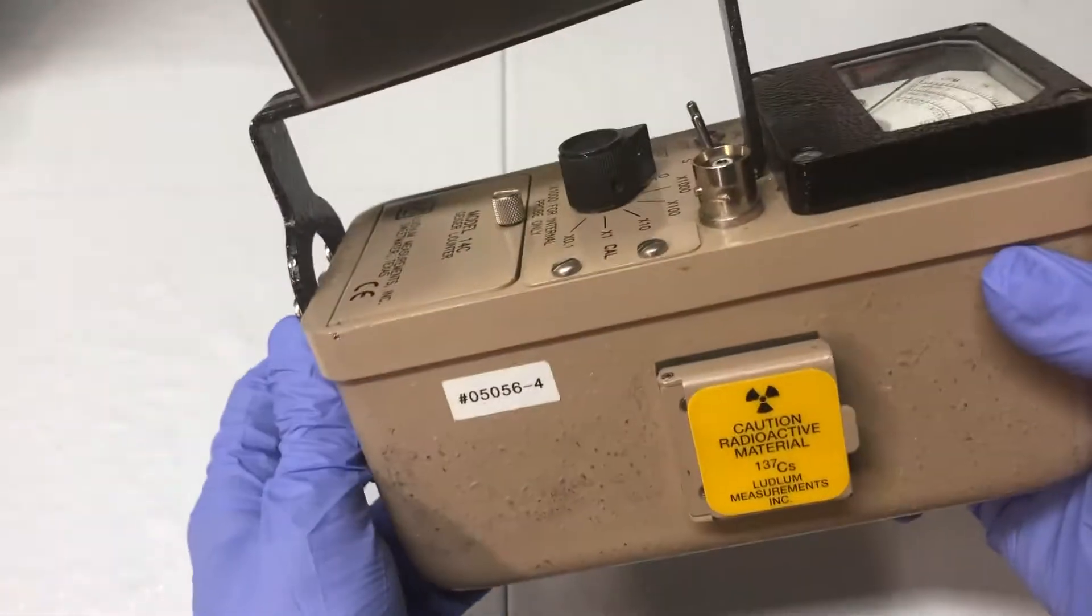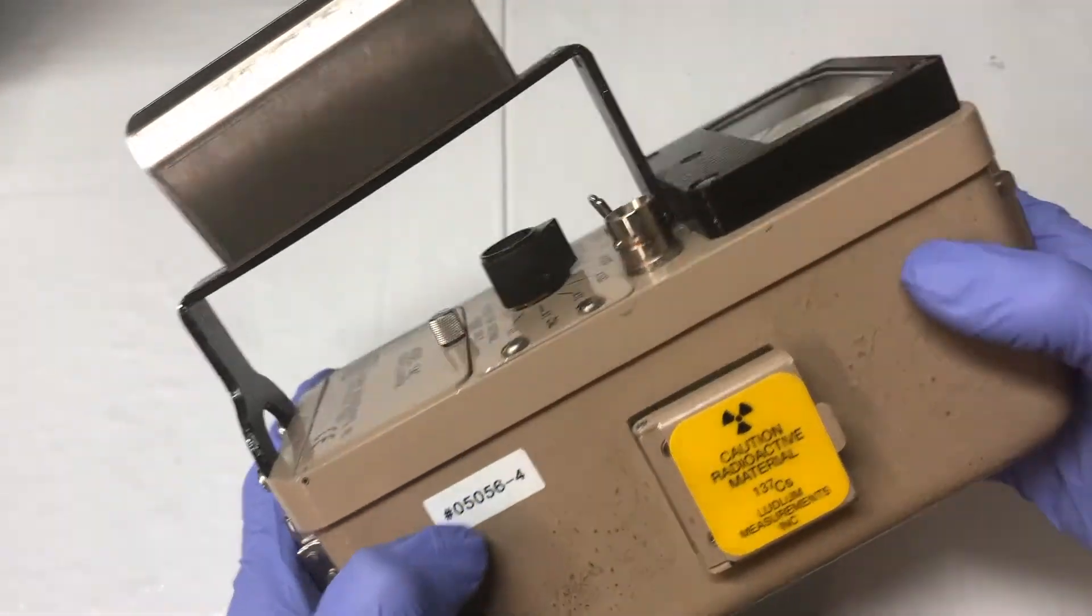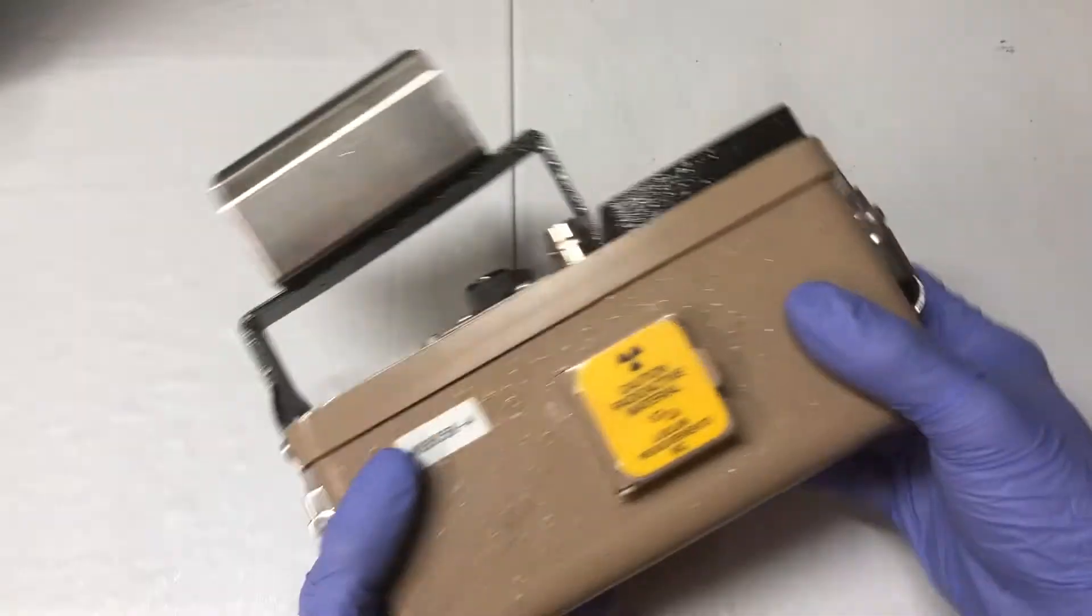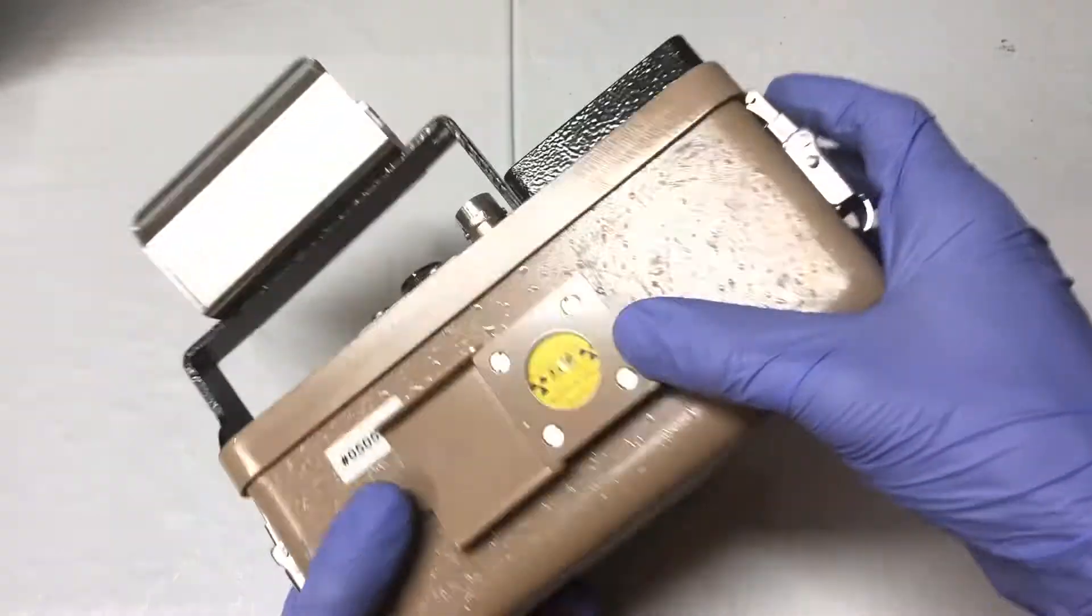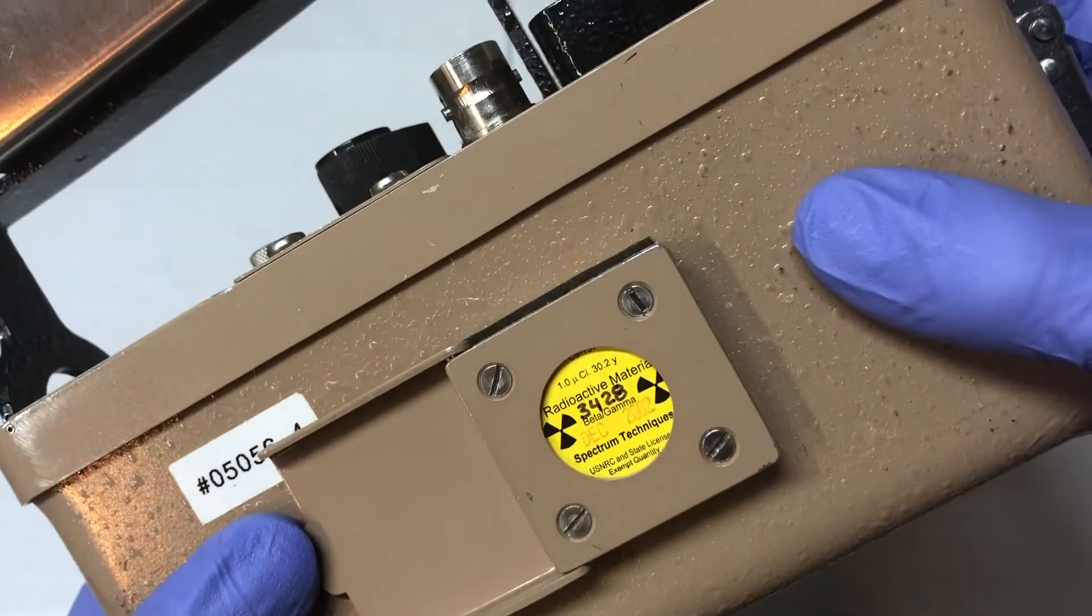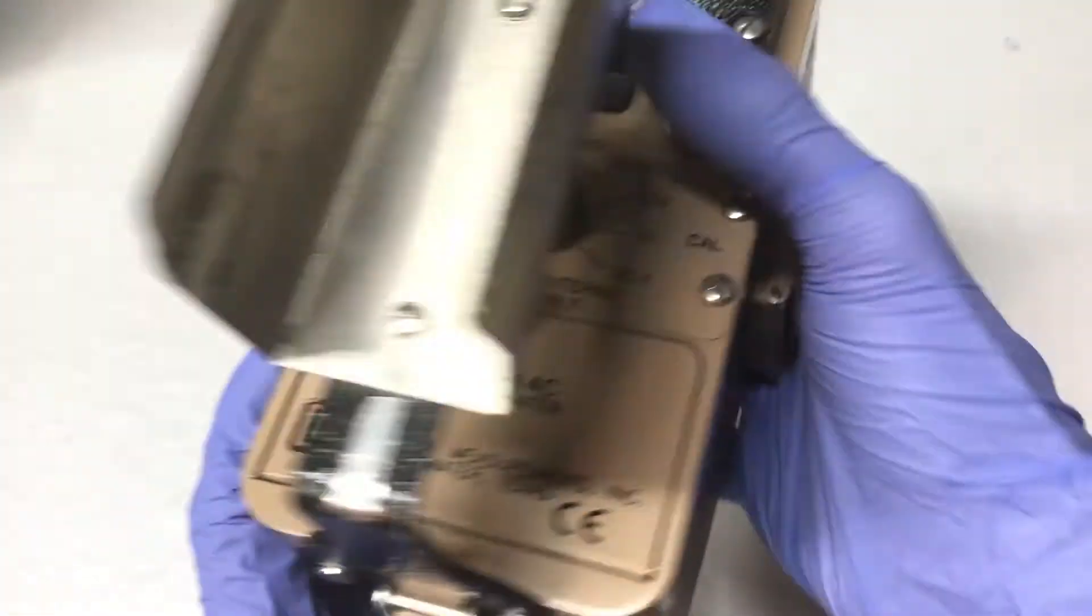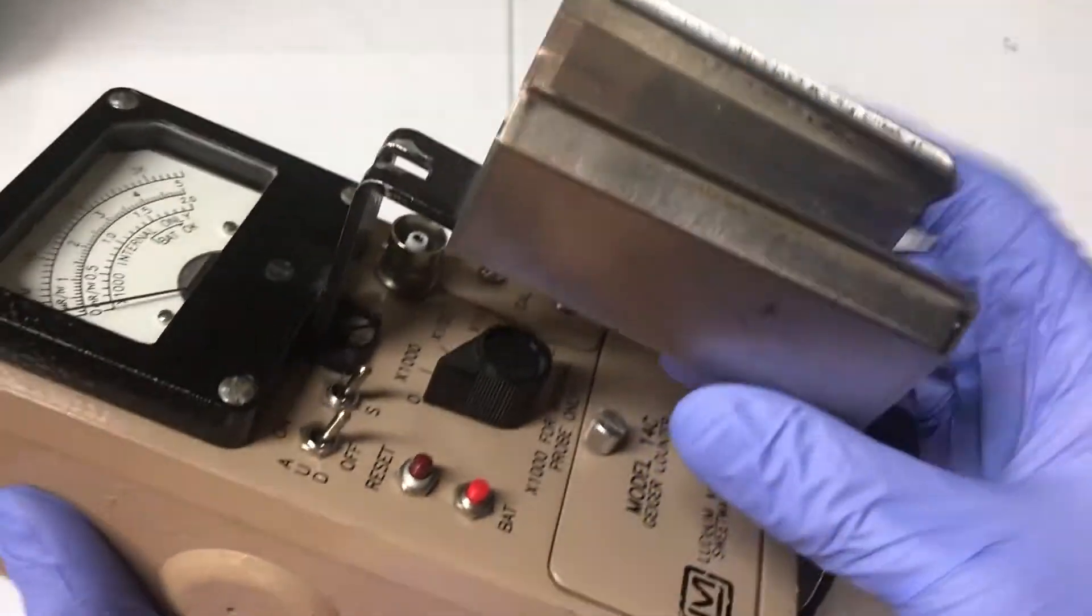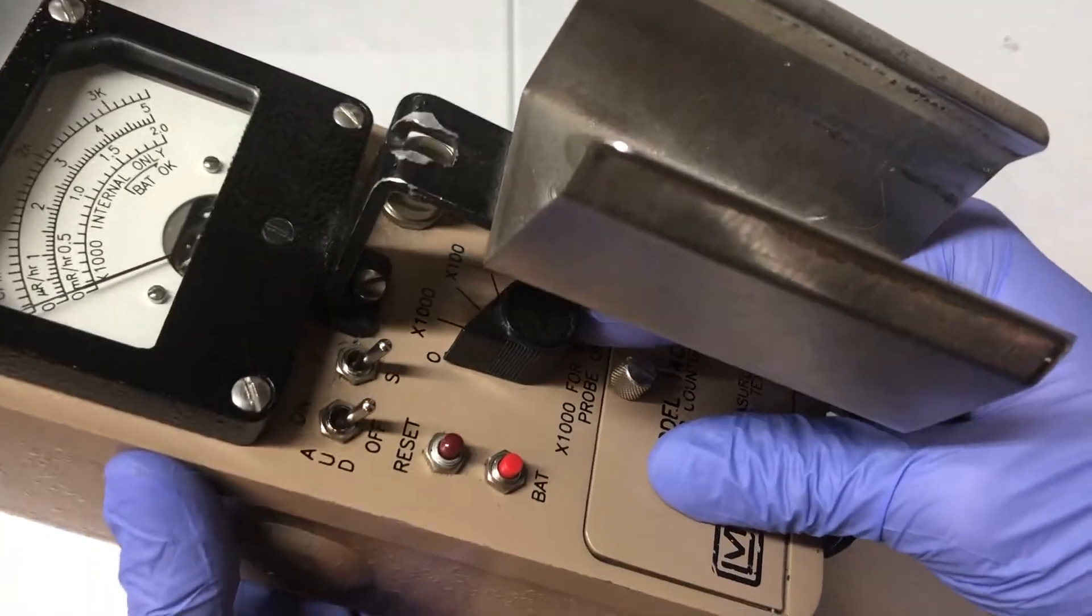For freedom units lovers, that's 3.5 pounds with batteries and 2.6 pounds without. Unlike the rest, this one comes with a cesium-137 source on the side which outputs beta and gamma. Looking at the face, you see the handle with detector holder and the dial which can read 1000, 100, 10, 1, and 0.1.